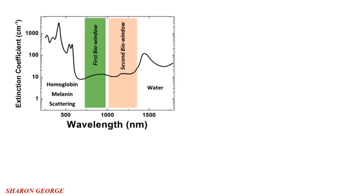The second biological window extends from 1000 nanometers to 1400 nanometers. Both limits correspond to water absorption bands — that means both 1000 nanometers and 1400 nanometers are within the water absorption band. In this spectral window, optical absorption does not vanish completely, but on the other hand, the optical scattering is minimized because of the longer wavelength.